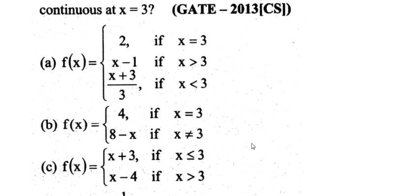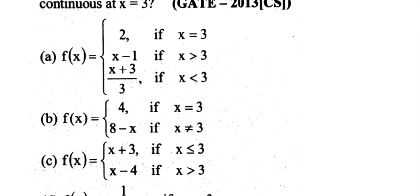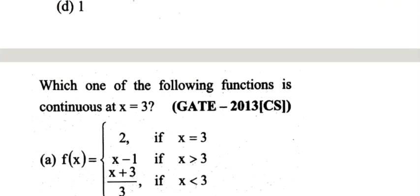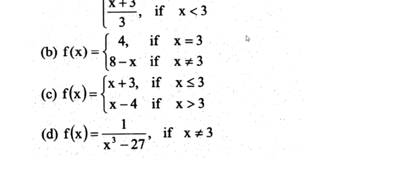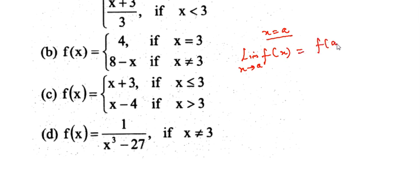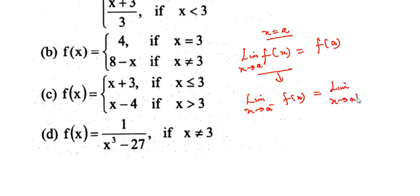Simply substitute x = 3 in each function to find the value. The condition for continuity at x = a is: limit as x → a⁻ of f(x) = limit as x → a⁺ of f(x) = f(a).